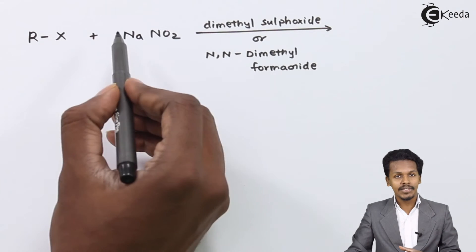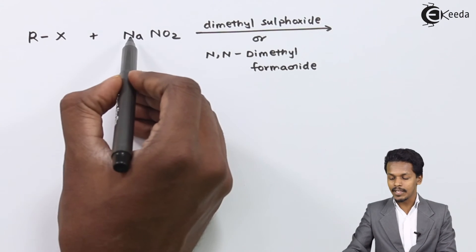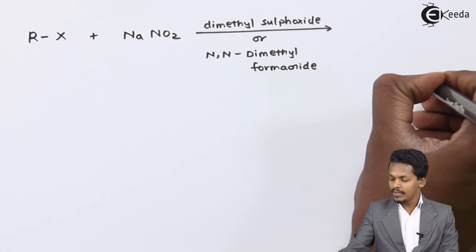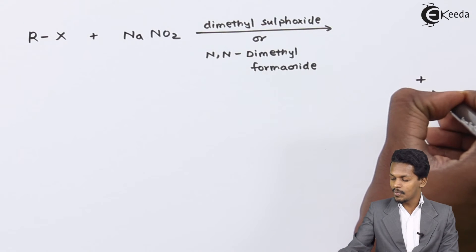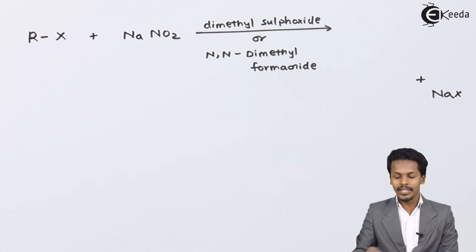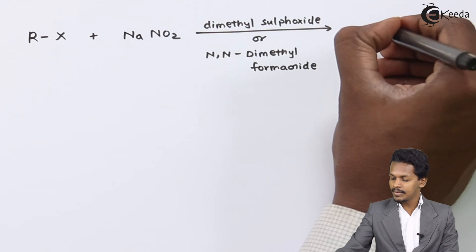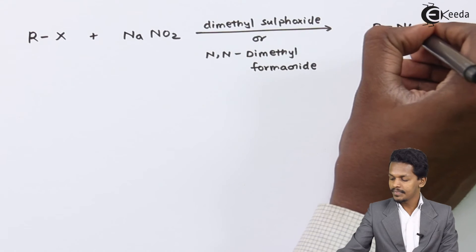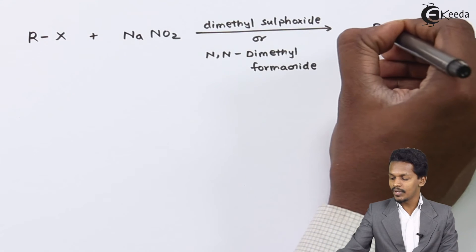In this reaction, the byproduct removed is NaX, and the main compound we obtain is R-NO2, which is the nitroalkane.